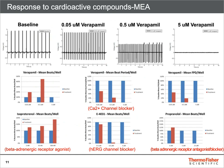Cardiomyocytes generated using the Gibco PSC Cardiomyocyte Differentiation Kit are physiologically active and respond to cardioactive compounds, as shown here. When cardiomyocytes are exposed to verapamil, a calcium channel blocker; isoproterenol, a beta-adrenergic receptor agonist; E4031, a HERG channel blocker; or propranolol, a beta-adrenergic receptor antagonist — results are as expected. Data here was generated using multi-electrode array.